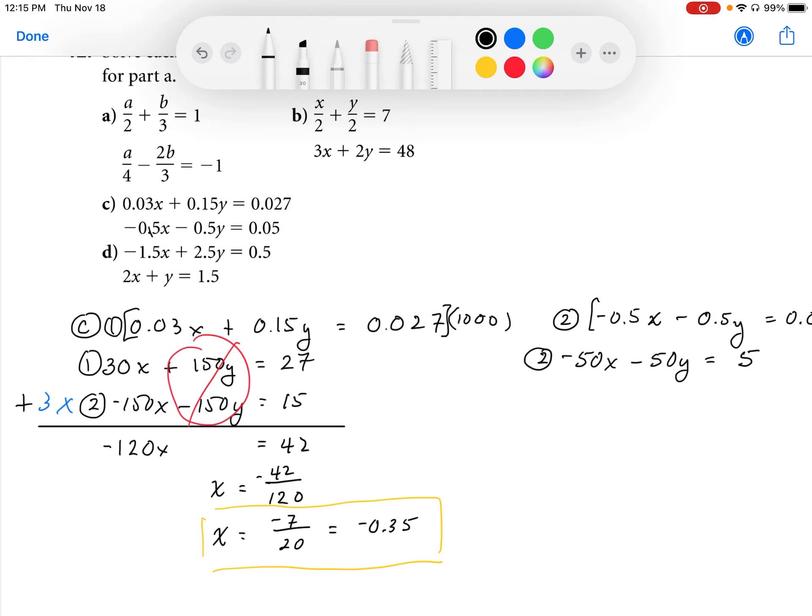And I'm going to then substitute x into my equation. So I'm going to substitute into equation 2. So I'm going to put negative 0.35 minus 50y equals 5. Multiplying that through, I'm going to get, that looks like it's going to be positive 17.5 minus 50y equals 5. Subtract 5 from both sides. I end up with 50y, and solving for y, I get 12.5 divided by 50.